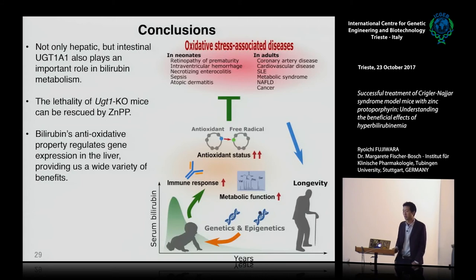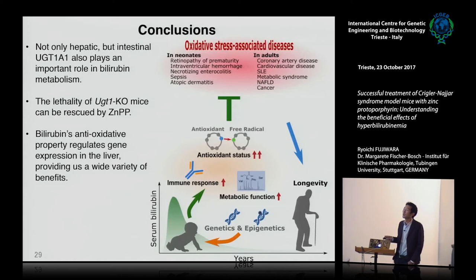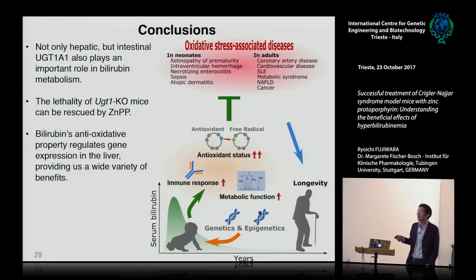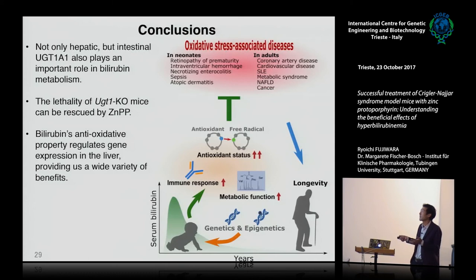So this is the conclusion of today's talk. First, we showed for the first time that not only hepatic UGT, but the intestinal UGT1a1 is also important for bilirubin metabolism, especially during the neonatal period. We showed that the lethality of UGT1 knockout mice can be rescued by zinc protoporphyrin. And finally, we learned that bilirubin's antioxidant properties can regulate gene expression, especially in the liver, and that maybe provides a wide variety of benefits. If you have hyperbilirubinemia during the neonatal or adult period, maybe they acquire some better benefit, and in later life they have less risk of developing disease — so maybe it can lead to longevity.